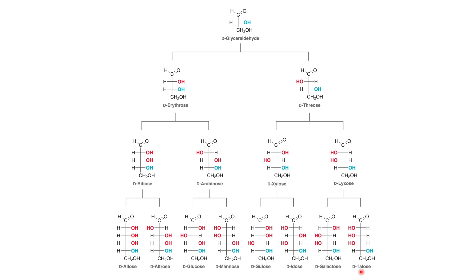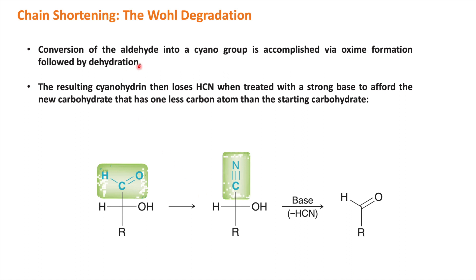Next is chain shortening - the Wohl degradation process. Here you shorten the chain length, converting aldohexoses to aldopentoses, pentoses to tetroses, tetroses to trioses. In this process you convert the aldehyde to a nitrile, and then nitrile removal gives you an aldehyde that is one carbon less than the starting material.